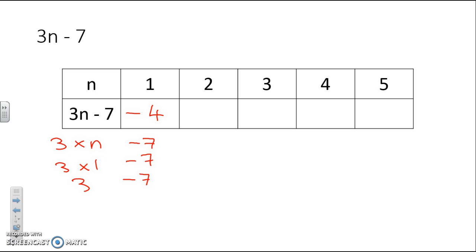3 times 2 is 6. Take away 7 is minus 1. 3 times 3 is 9. Take away 7 is 2. 3 times 4 is 12. Take away 7 is 5. And 3 times 5 is 15. Take away 7 is 8.